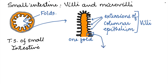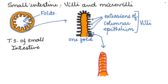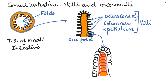If we take an enlarged part of a villus — villus being the singular of villi — we can see blood vessels and lacteals on the inside, and columnar epithelial cells on the outside.